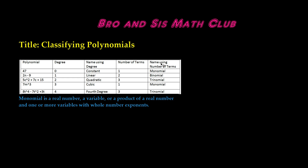And the name using the number of terms. So basically you can classify polynomials in two categories: the name using the degree and the name using the number of terms.